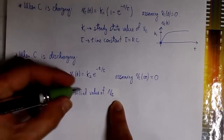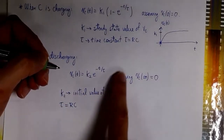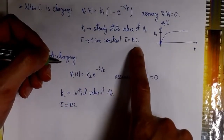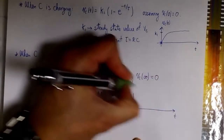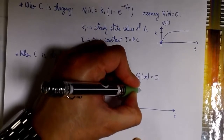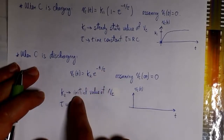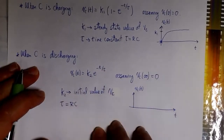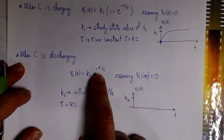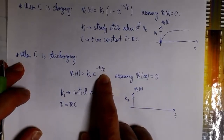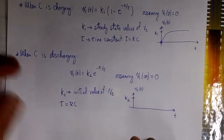Tau is the time constant, and we calculate it by multiplying R times C. This R is the resistance the capacitor is charging through. If we want to plot this equation: when t equals zero, the exponential is one, so the voltage is k2 — that's the initial value. But when t goes to infinity, the exponential goes to zero, so the whole expression goes to zero. The final value is zero when the capacitor is fully discharged.